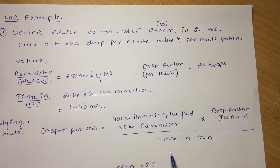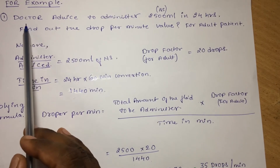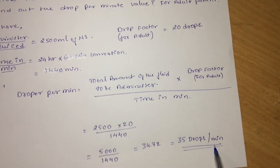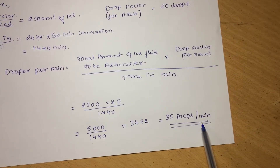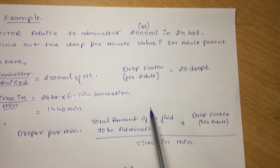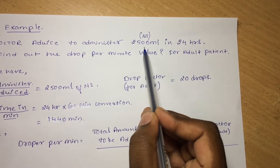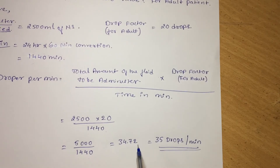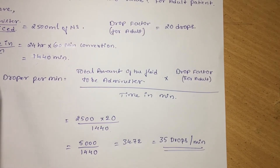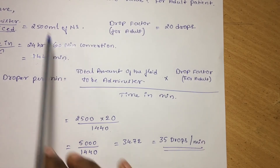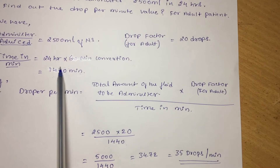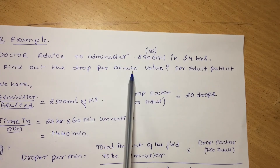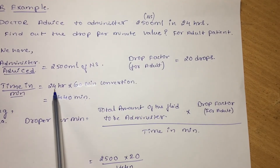The answer for this question is 35 drops per minute. If we fix the NS at 35 drops per minute, within 24 hours we will be finishing 2500 ml of normal saline. This is very simple — just concentrate on the formula and substitution. Note: if they ask for drops per hour, we should not convert hours into minutes.